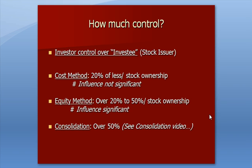The cost method is used when the ownership is 20% or less, and the influence is not significant, so we treat the investment at cost just like any other asset we buy at cost. When ownership is between 20% and 50%, we say the investor has significant ownership and we use the equity method. The third method, if you own over 50% stock ownership, is the consolidation accounting method, which we've covered in our consolidation videos.